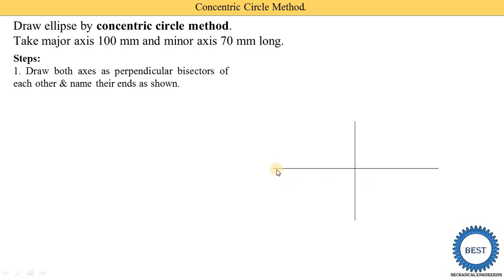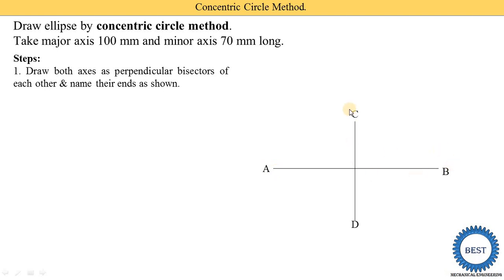So the horizontal line is the major axis, 100 mm long, and the vertical line is the minor axis, 70 mm long — 35 mm above the major axis and 35 mm below it. We give names to these axes: the major axis is labeled A to B, and the minor axis is labeled C to D.